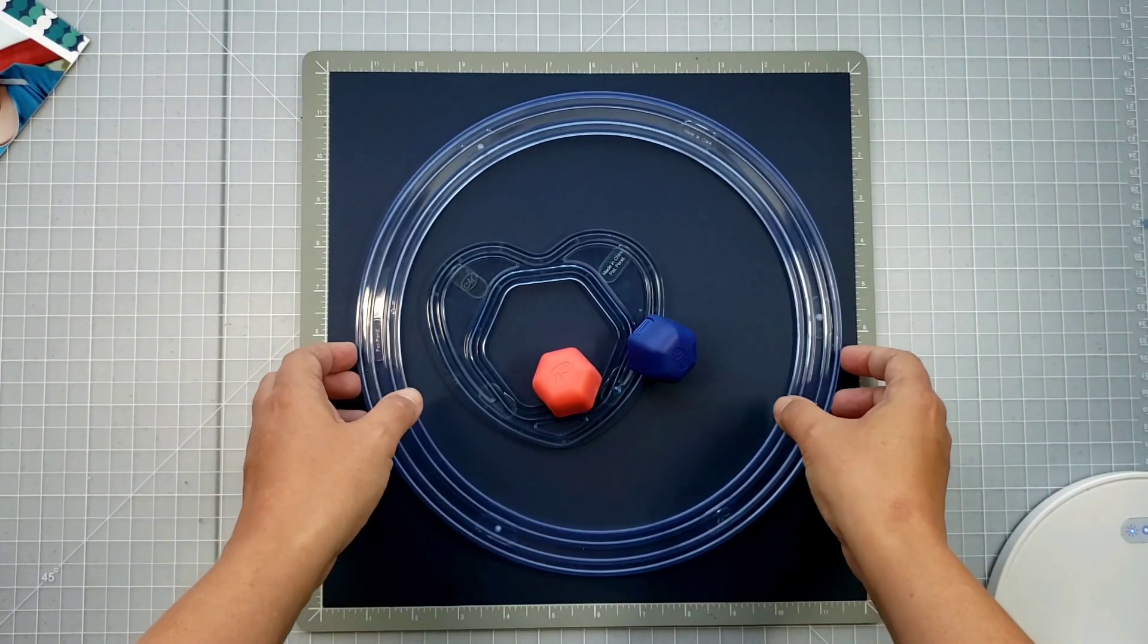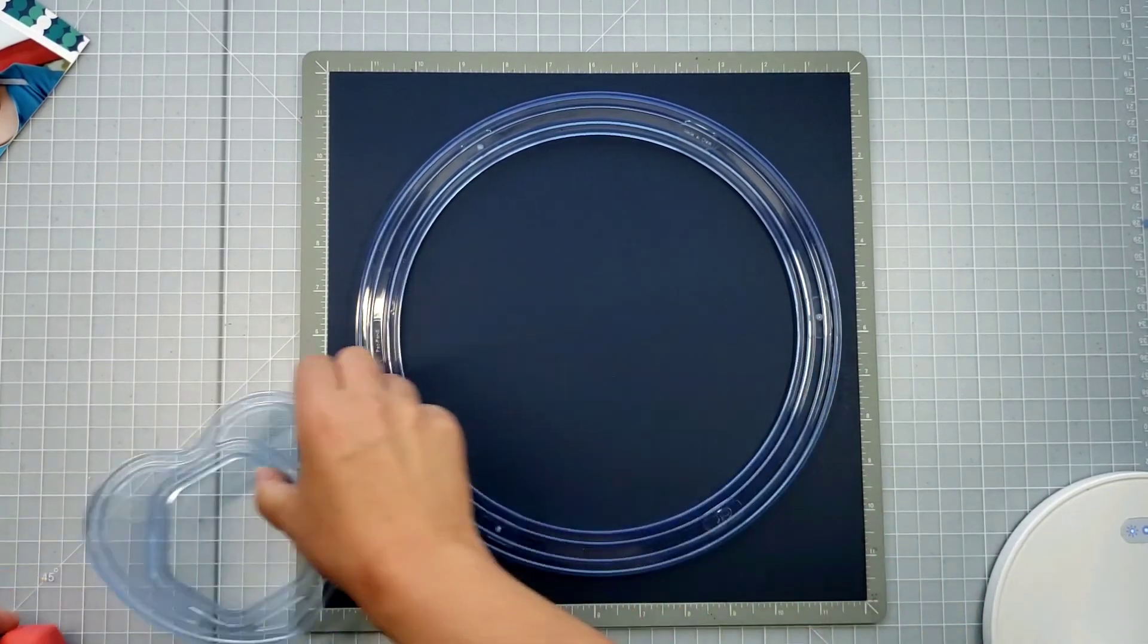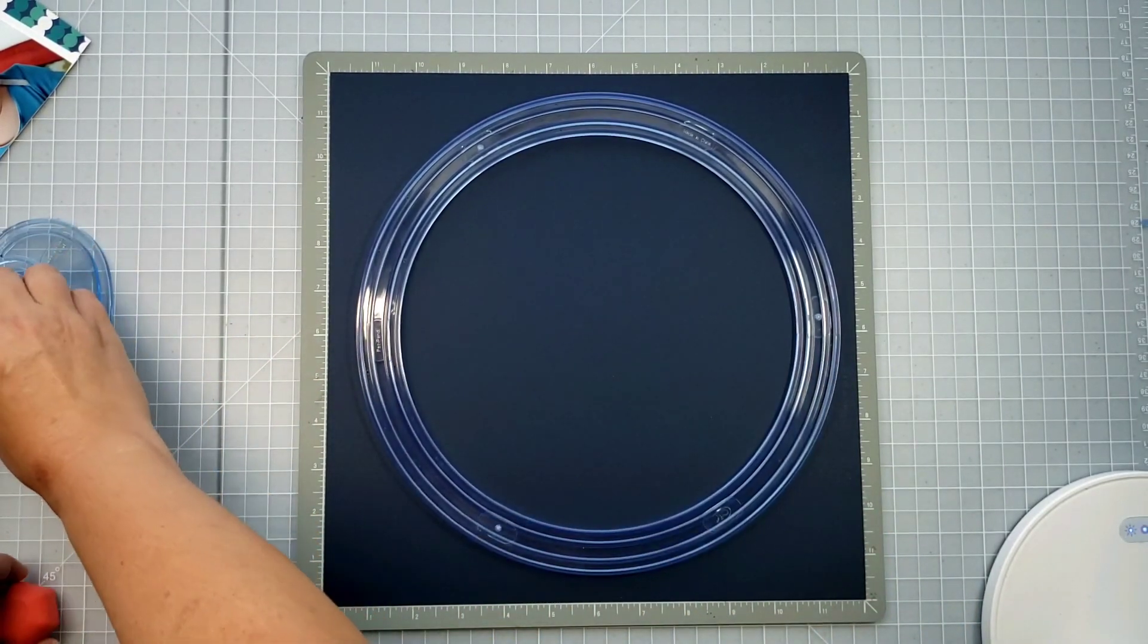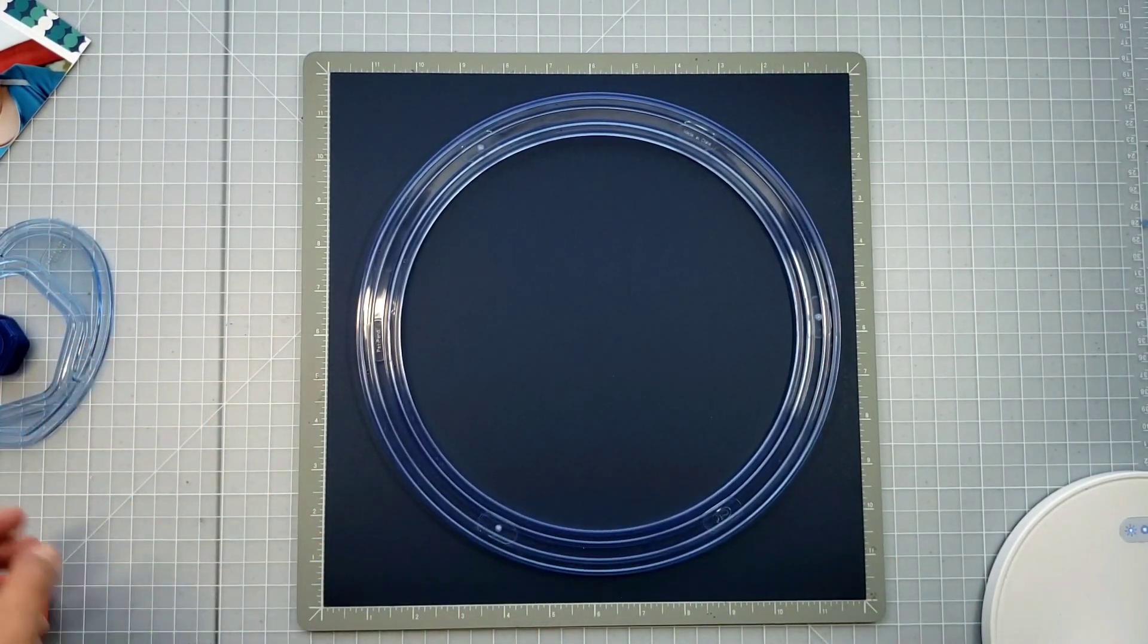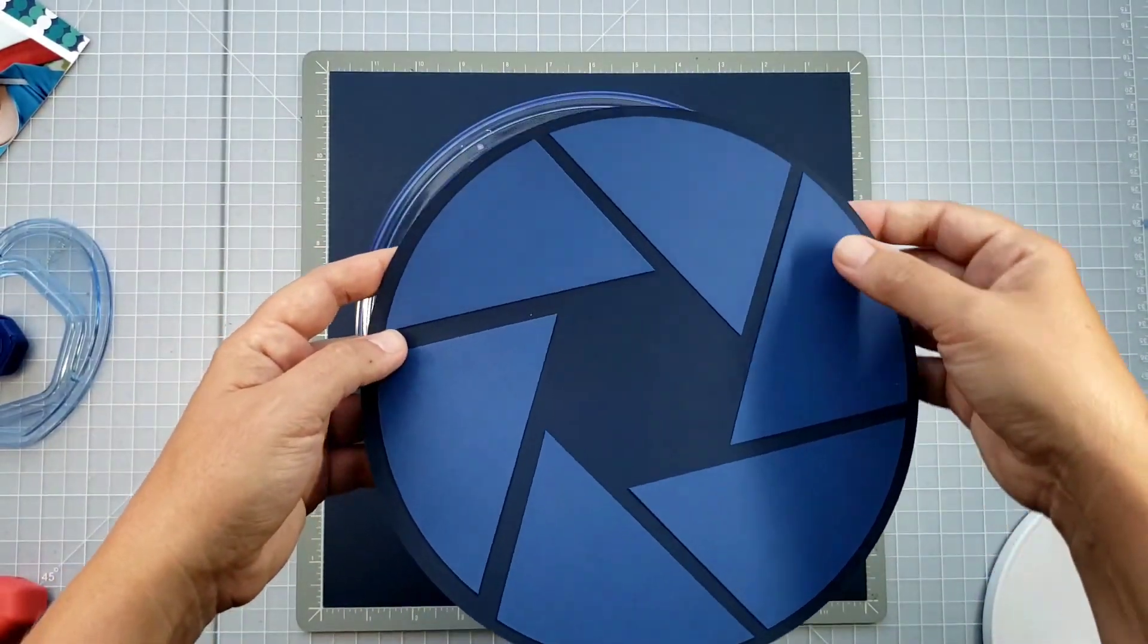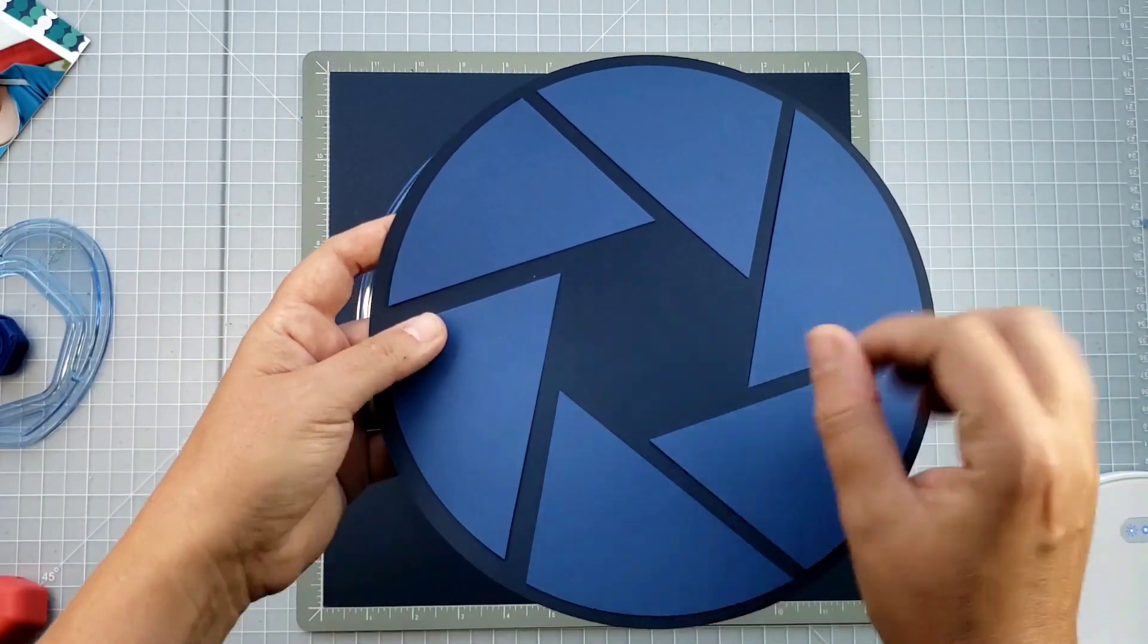To start off, we're going to use our Jumbo Circle with a piece of navy cardstock. This navy cardstock is going to be the backing portion of my shutter icon. I have a second one here that I've made so you can see it's my backing color.